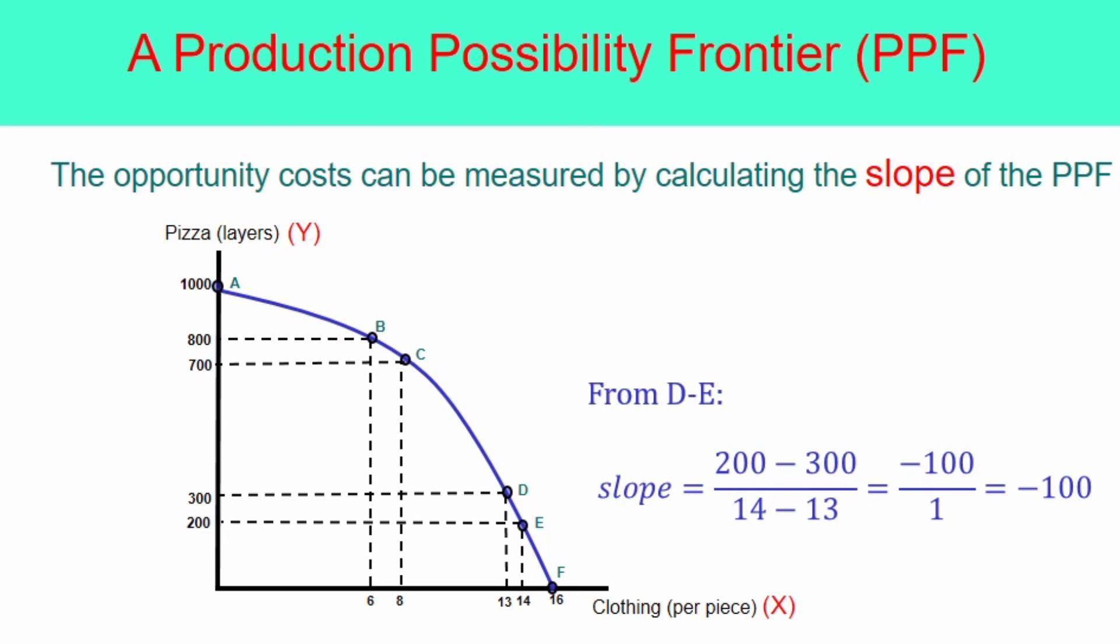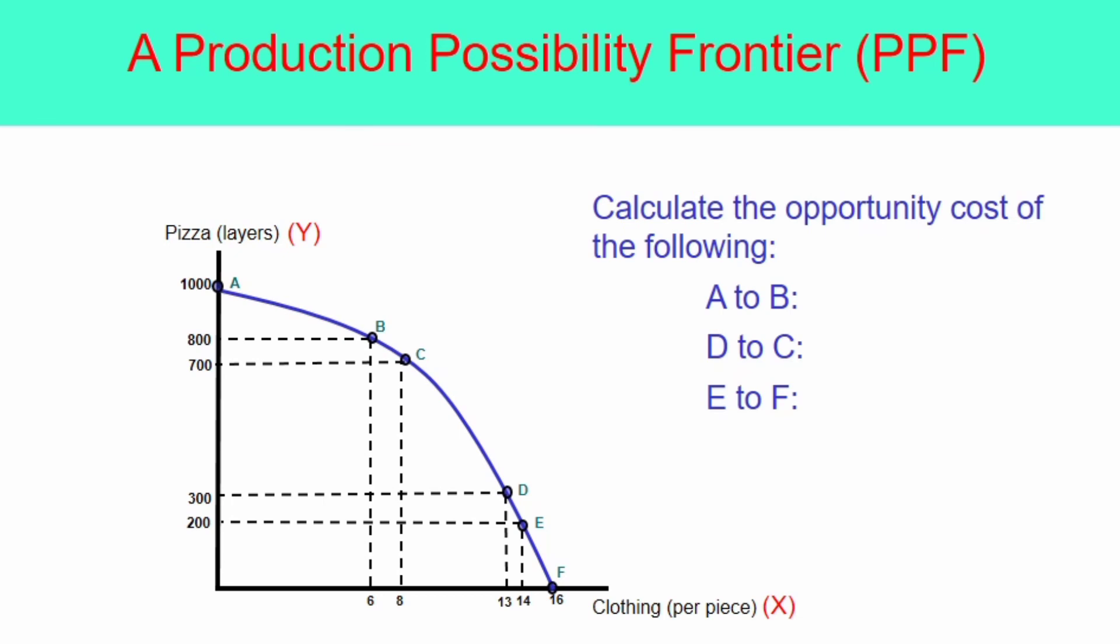The opportunity cost is the reason why the PPF is downward sloping. Now, calculate the opportunity cost of the following. From point A to B, from point D to C, and from point E to F. Now, let us wrap up all the things that we learned from the PPF.